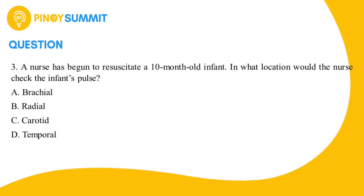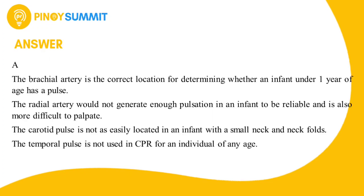To make it easier to find the correct answer, let us remove the two incorrect options, leaving only options A and C. If your answer is letter A, then you are correct. The brachial artery is the correct location for determining whether an infant under one year of age has a pulse.